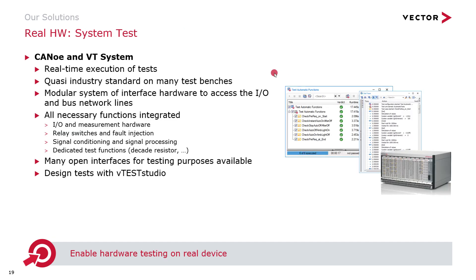If you have tested your virtual application with our tools, you can then connect your real hardware device to CANoe using the VT system and reuse the test cases you already created for the virtual environment. This brings me to the end of the presentation — from unit test to system test, make sure your application works. I would be happy if you remember the different levels of testing and how to use them to increase your software quality. I look forward to your questions in the following Q&A session. Thank you very much for your attention.